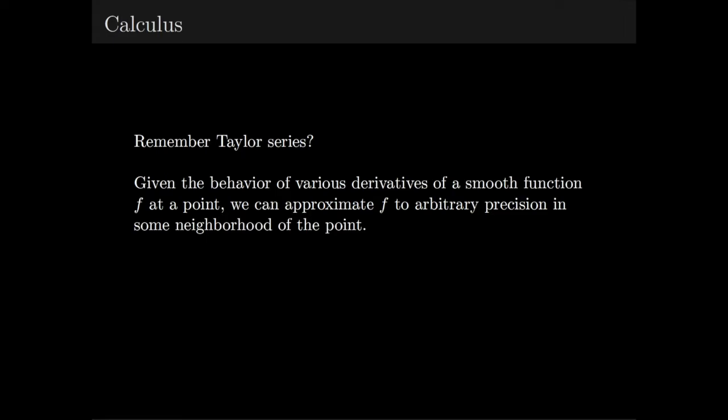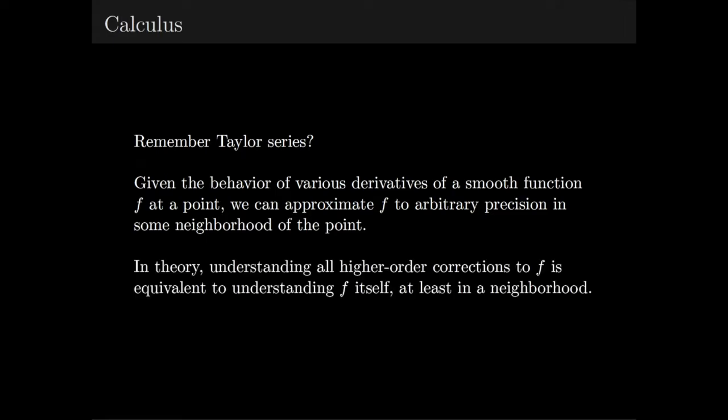In a sense, each successive derivative gives you a higher-order correction to the value of f in this neighborhood. In the same way, the existence and uniqueness of Postnikov towers is equivalent to saying that each successive homotopy group gives you a higher-order correction to the weak homotopy type of your space.